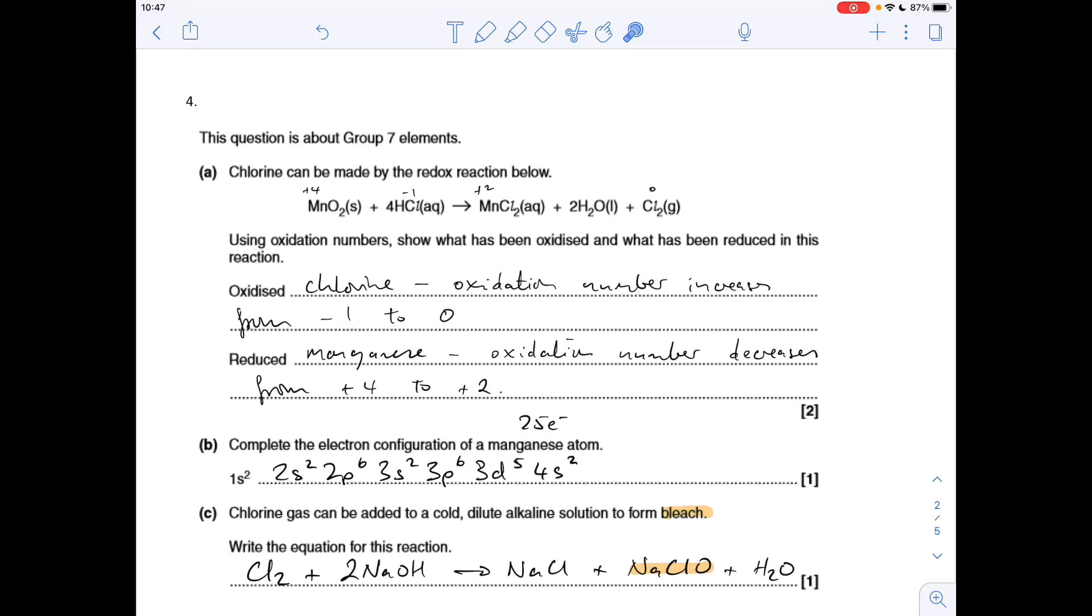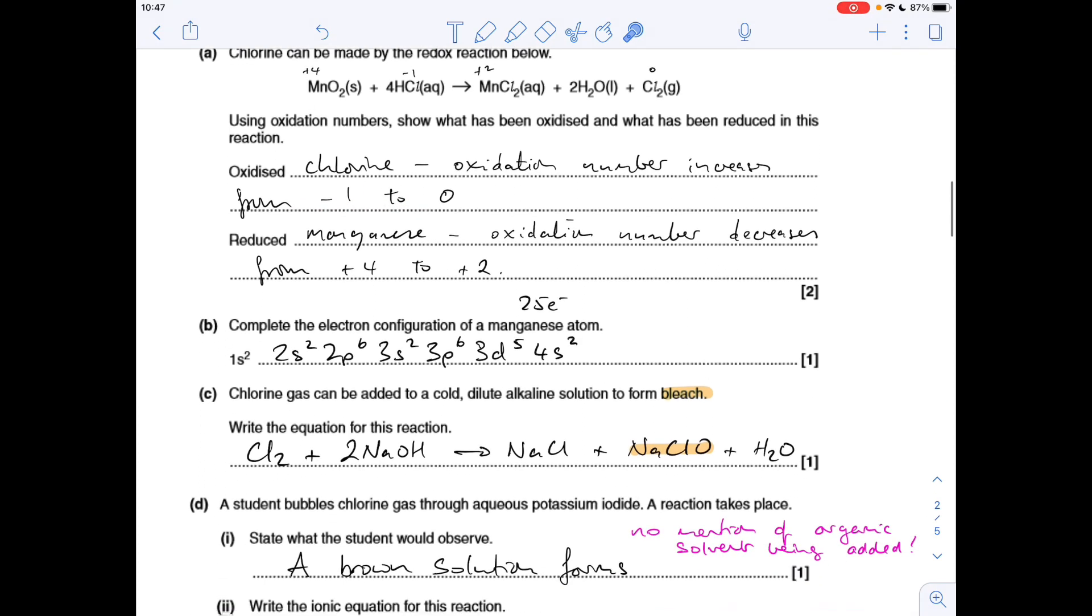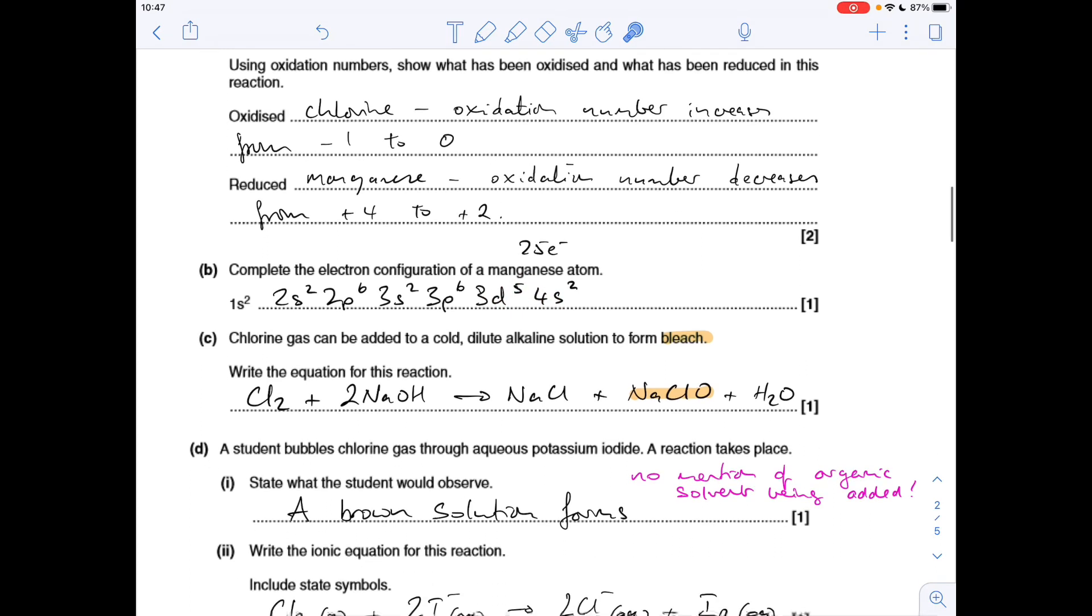Complete the electron configuration for the manganese atom. So 25 electrons in the atom, so it's that, and you can write 4s2 then 3d5 if you want. That's fine to change those around.